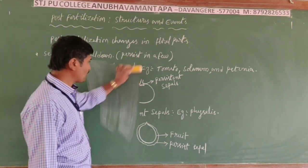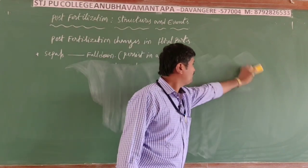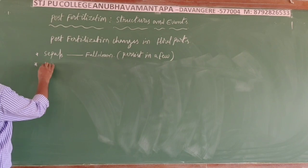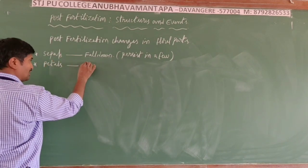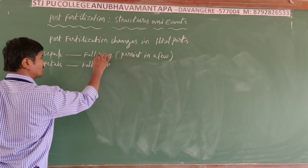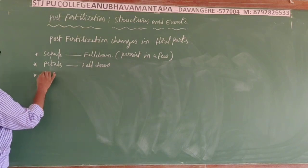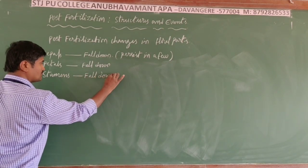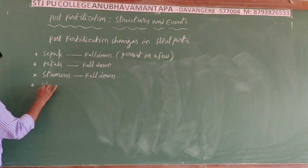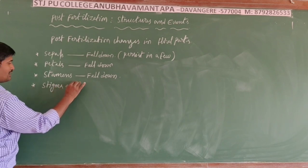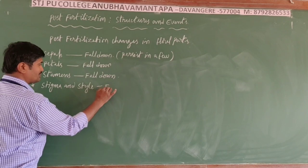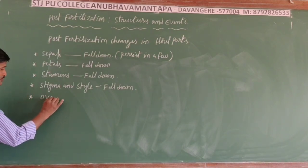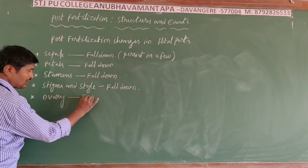After fertilization, petals also fall down. Stamens also fall down. Stigma and style — these parts also fall down. Next, the ovary is developed into the fruit after fertilization.